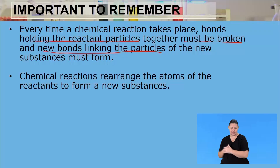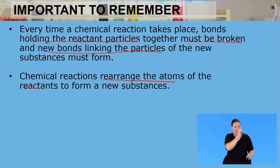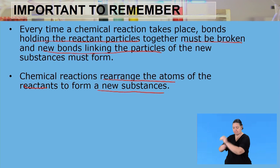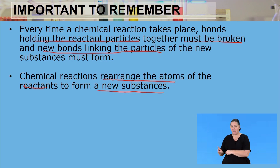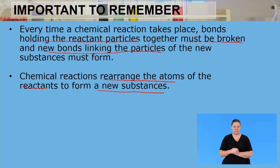What's also important to remember is that chemical reactions rearrange the atoms of the reactants to form a new substance. Whenever a chemical reaction is taking place, the reactants are going to break the existing bonds, and once they break those bonds, they are going to rearrange to form something new — and that something new is a product.